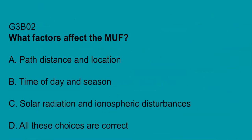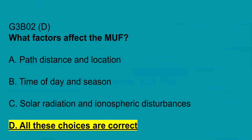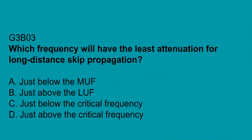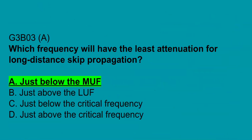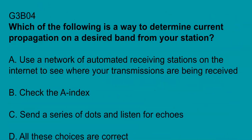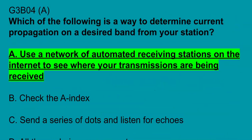G3B02: what factors affect the maximum usable frequency? All of the above: path distance and location, time of day and season, and solar radiation and ionospheric disturbances. G3B03: which frequency will have the least attenuation for long-distance skip propagation? G3B04: which is a way to determine current propagation on a desired band from your station? A user network of automated receiving stations on the internet to see where your transmissions are being received.